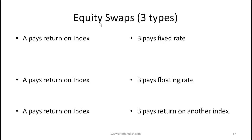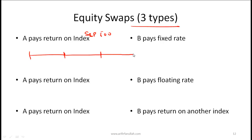The third kind of swap is an equity swap, which has three subcategories. In the first type, party A pays the return on an equity index and party B pays a fixed rate. For example, with the S&P 500 as the index and a three-year annual pay swap, each year we determine how much the index changed. If A pays based on the S&P 500 return and B pays a fixed rate of 5%, then for period 1 B pays 5%.